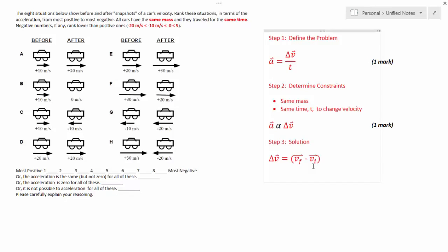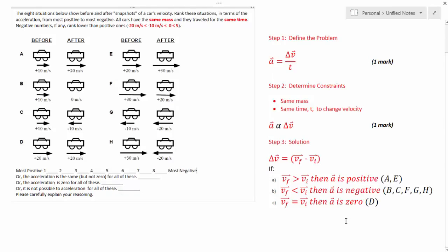So let's organize these three categories and then we can determine our ranking. It's important that you include this step because it shows that you really understand the question and you're actually fleshing out the physics. So I've got three comments here. One, if v-final is greater than v-initial, then a is going to be positive. And I've determined that that's situations a and e. So you can see here a has a v-final that's positive 20 and a v-initial that's 10. So that's v-final is greater than v-initial and same with e.